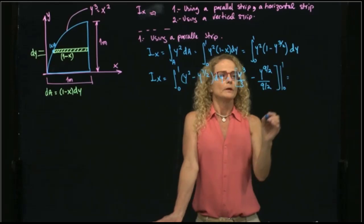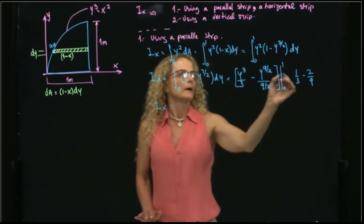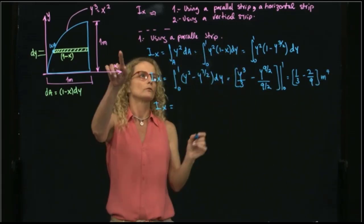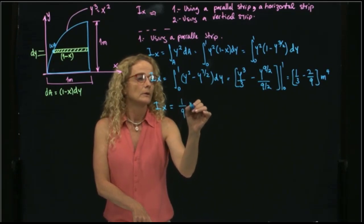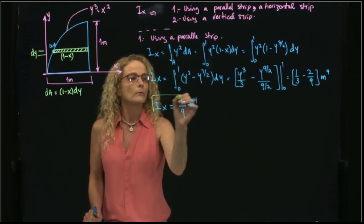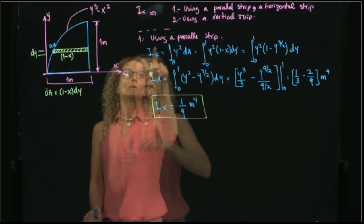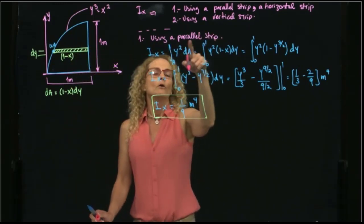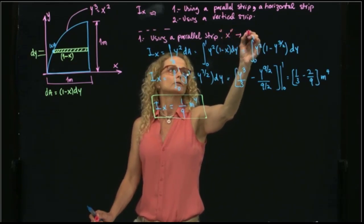That gives me 1/3 minus 2/9. That's all in meters to the fourth, right? Because my limit of integration is in meters. 1/9 meters to the fourth. So that's the result of my area moment of inertia of this plate using a parallel strip to x, which is a horizontal strip.